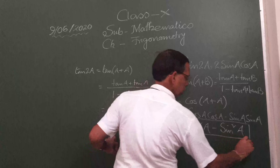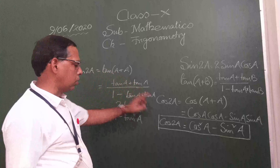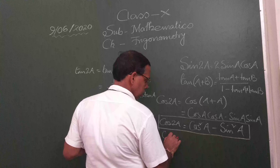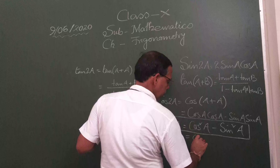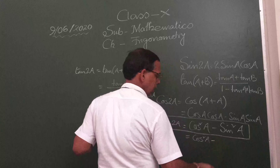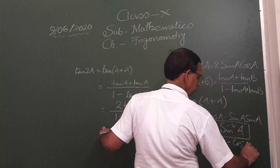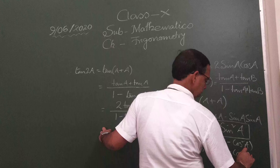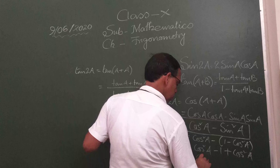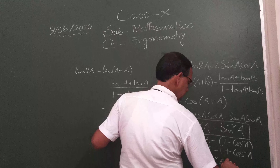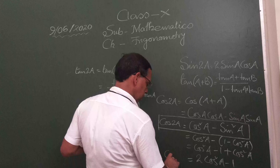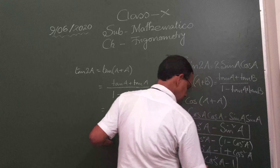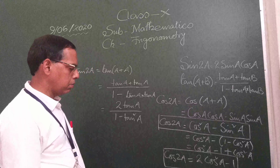You've got sin(2a), tan(2a), and now cos(2a). For cos(2a) there are two more formulas. In place of sin²a we write (1 - cos²a), so cos(2a) = cos²a minus (1 minus cos²a) = cos²a minus 1 plus cos²a = 2cos²a minus 1. This is the second formula: cos(2a) = 2cos²a - 1.